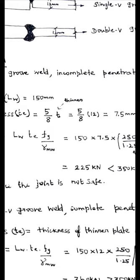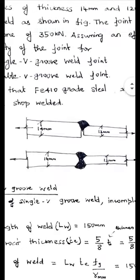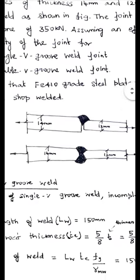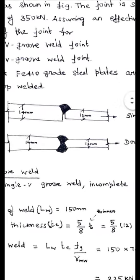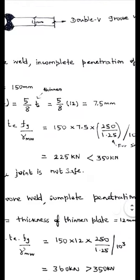So Indian made steel, all the steels having ultimate tensile strength of 410, yield strength of 250. That is why in the problem itself they have given as Fe 410 grade steel plates. So yield strength is 250.